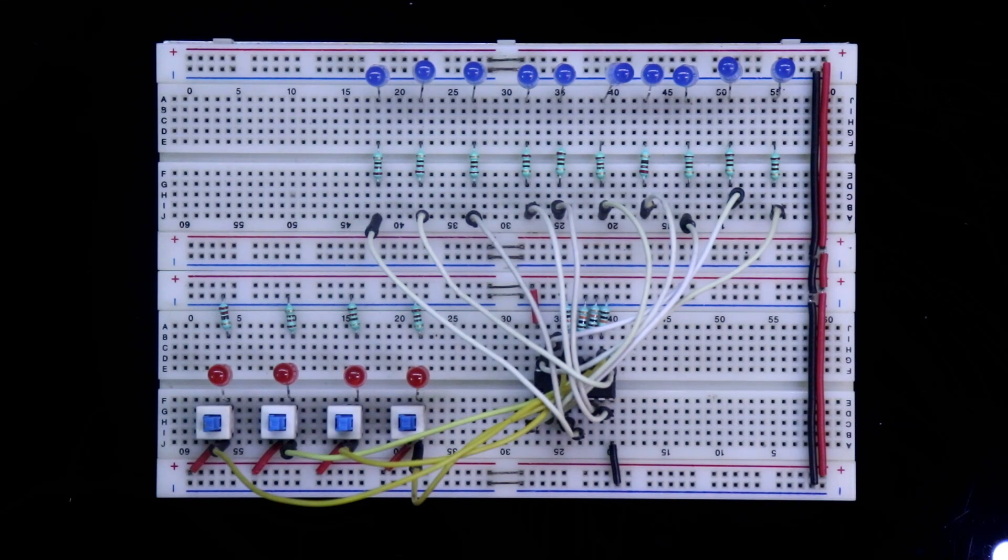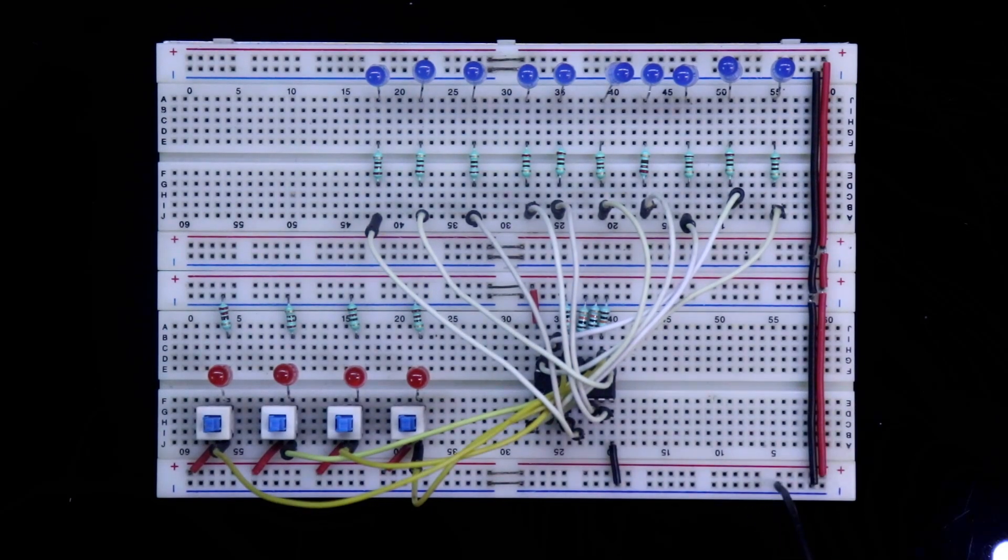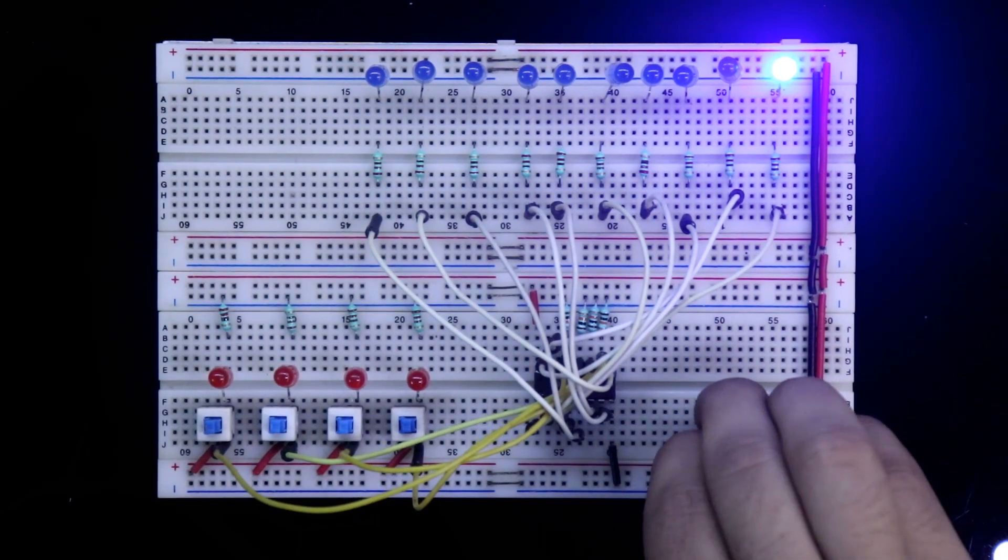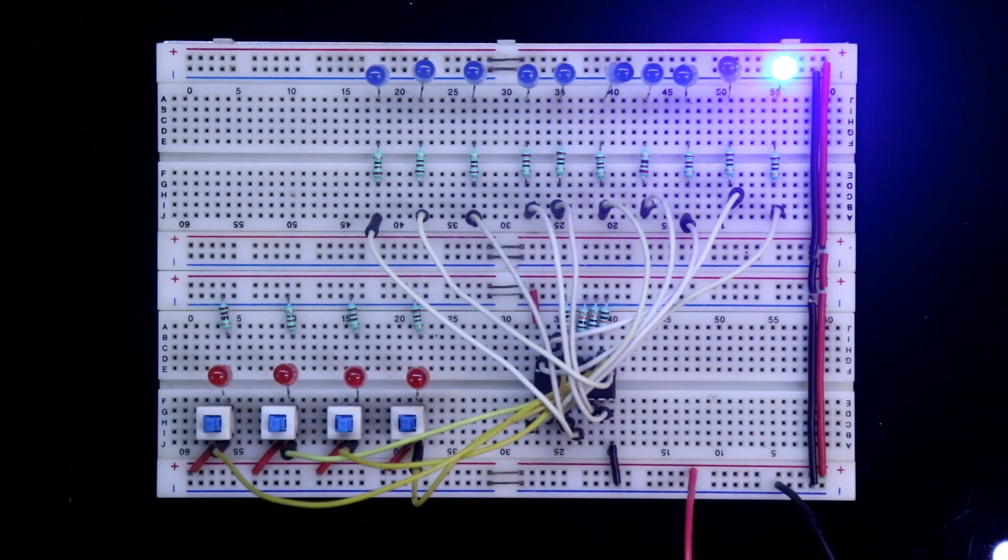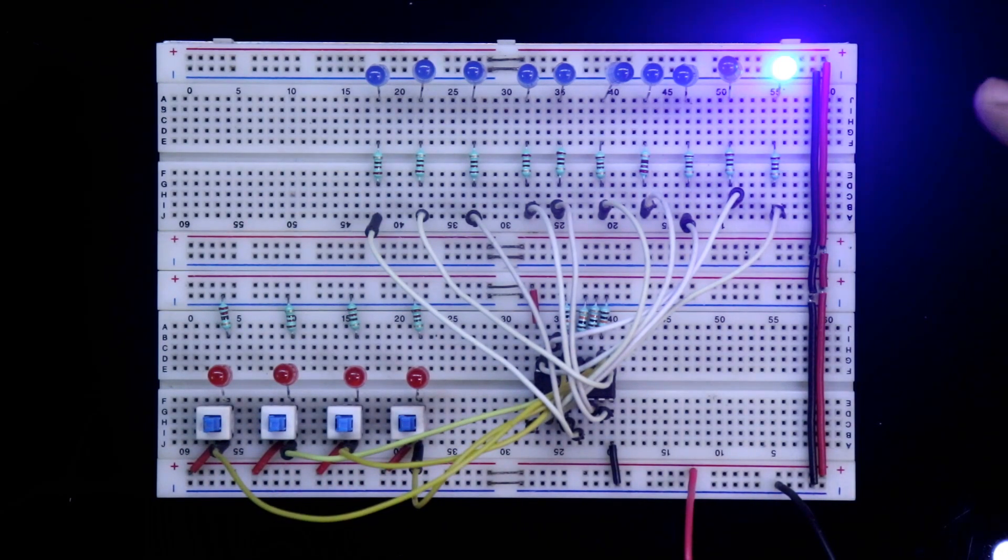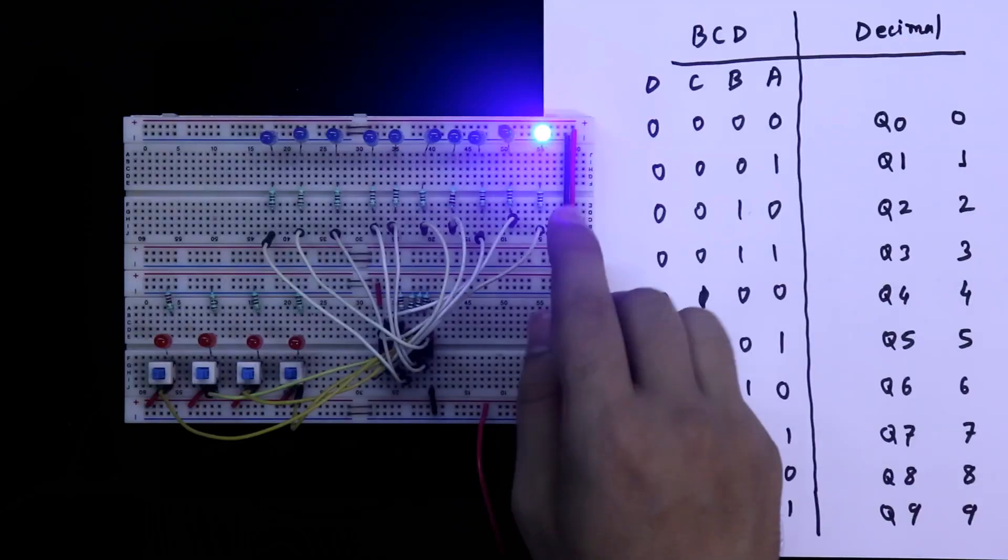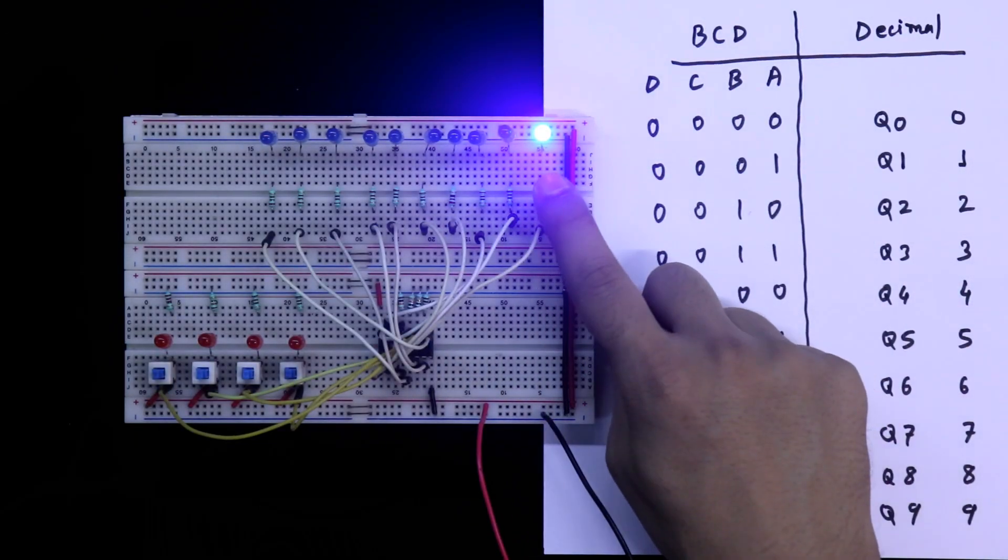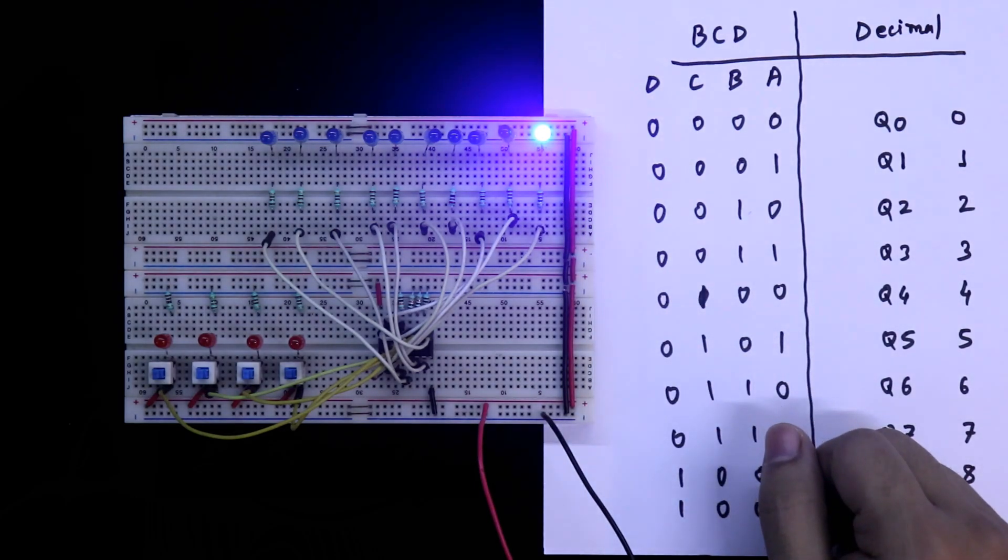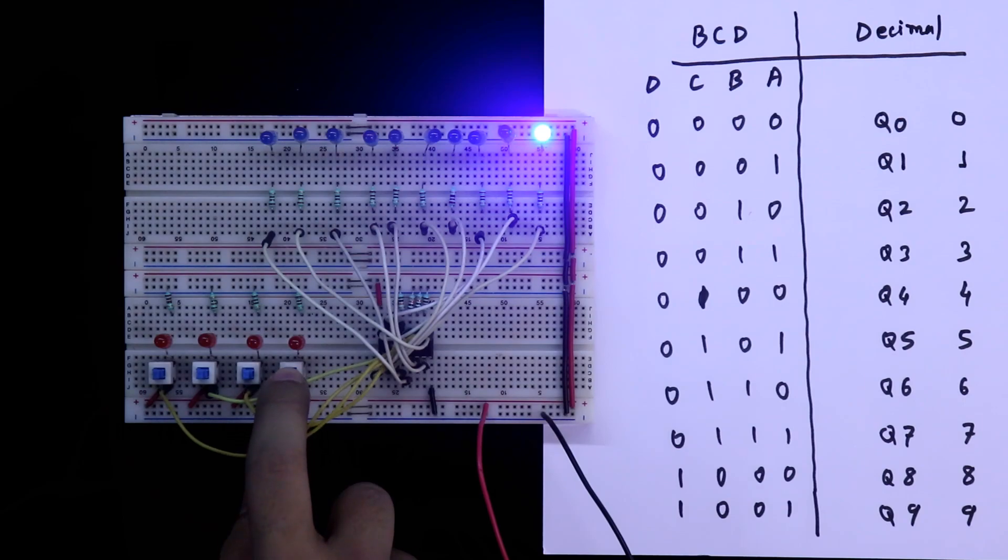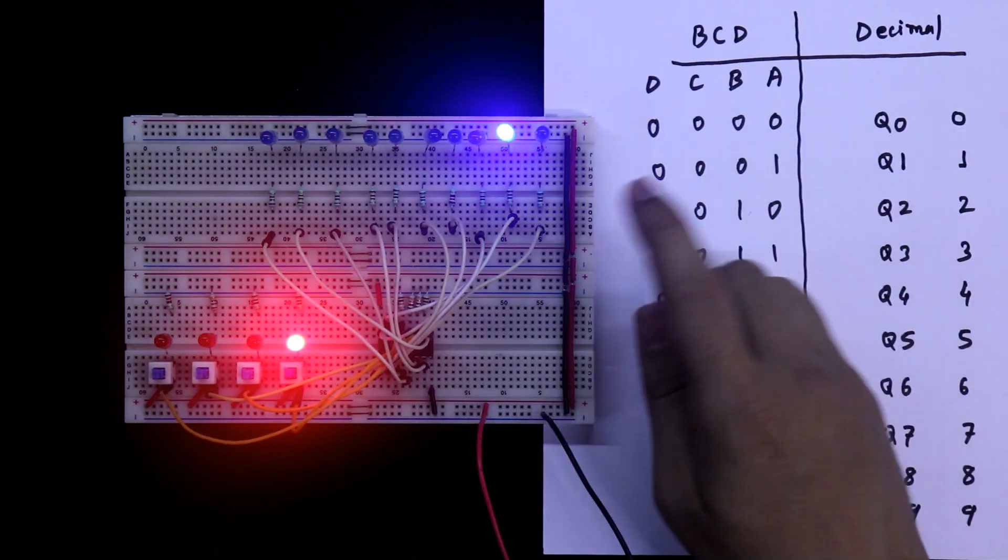Now I am going to connect plus five volt. Here it is negative and the positive. The input is 0, 0, 0, 0 means 0. So we are getting the output as 0, this Q0. The Q0 is high. As you can see here. If the input is 0001, Q1 is high.